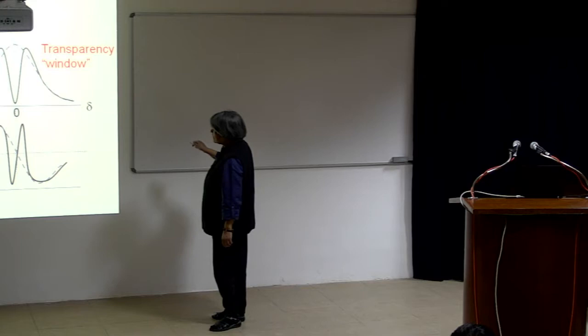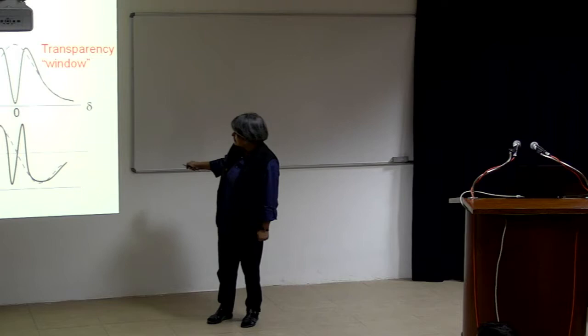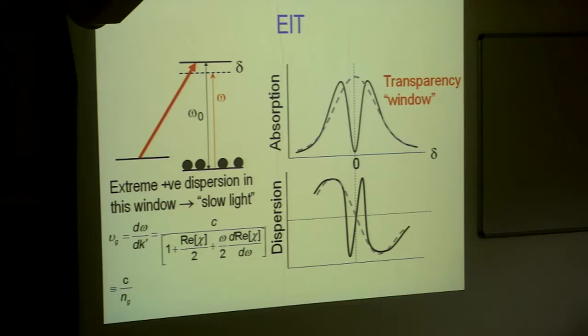The moment I have this laser on, this change happens. The moment I turn this off, I go back to my original two level system. This is really the idea. The physics of EIT would always have this probe laser. This is the one I am looking at, whether it is coming out or not. And this is the one I am using and it is called controller or coupling.